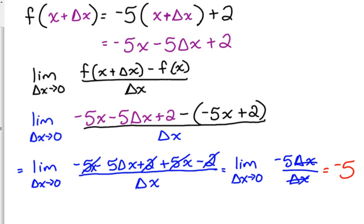That equals negative 5. So with this different function — we started with negative 5x + 2 — it has the same derivative as plain negative 5x. That's an idea we're going to continue building on.